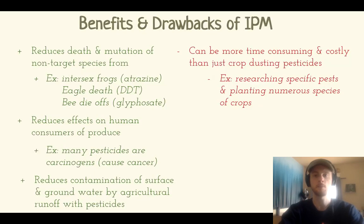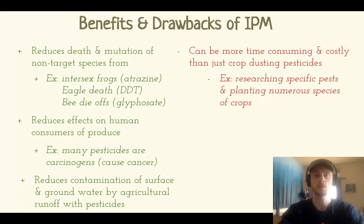The benefits — and really the entire purpose of IPM — is to reduce pesticide use. If you're reducing pesticide use, you should be reducing the deaths and mutations that result in non-target species. Atrazine can cause intersex frogs; DDT causes eagles' eggshells to thin and kills their hatchlings; and glyphosate, an herbicide, has been linked to large colony collapse and die-offs in bee populations. Minimizing pesticide use is really beneficial to a number of non-target species.